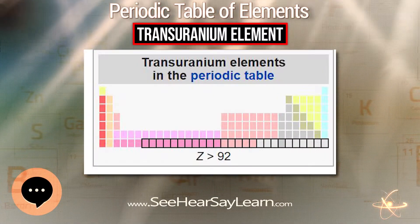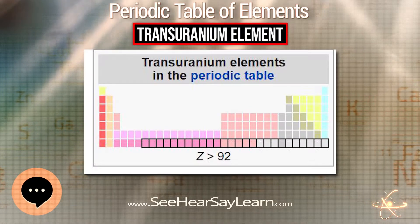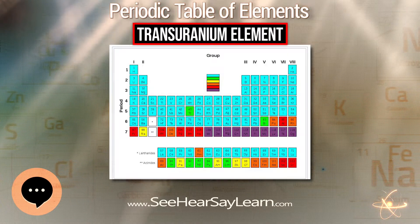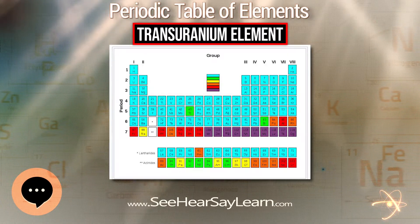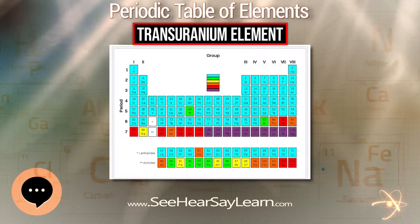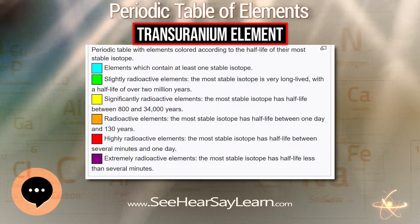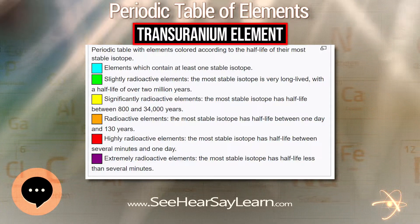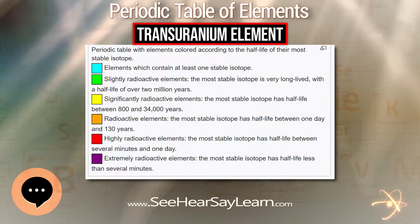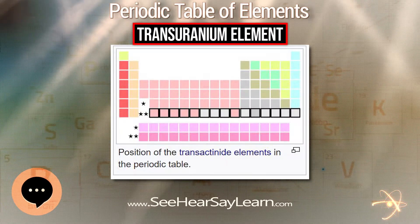Transuranium elements are the chemical elements with atomic numbers greater than 92, which is the atomic number of uranium. All of these elements are unstable and decay radioactively into other elements.